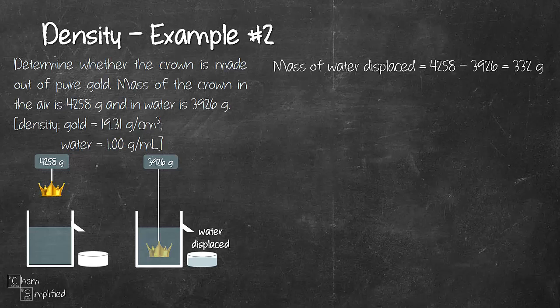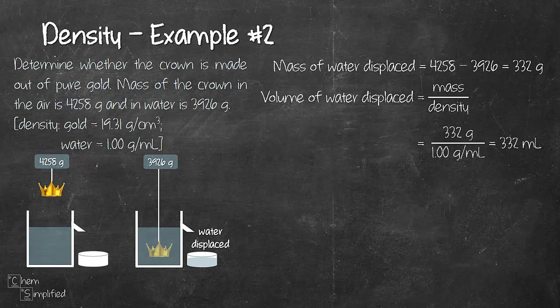Subtracting these two numbers will give us 332 grams. So that is the mass of the water that is displaced out. Now since we know the mass of the water and the question gave us the density of water, we can easily figure out the volume of the water that's displaced. So volume equals mass over density. We just simply rewrite the formula of density. Plug in these numbers will give us 332 mL.